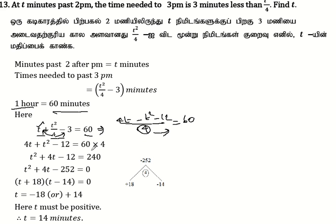So 4t plus t² minus 12 equals 16 times 4, which is 240.